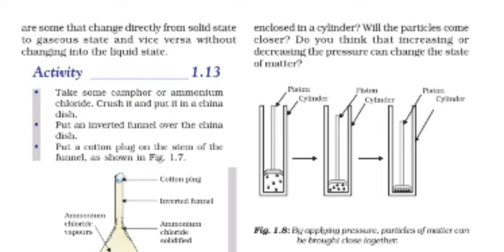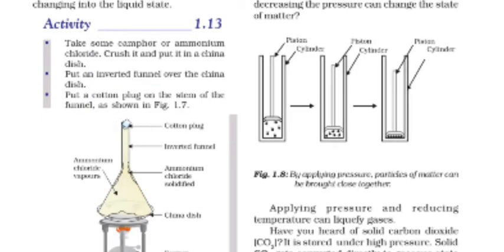In sublimation, the solid goes directly to vapor without becoming liquid. The activity uses ammonium chloride — you crush it and put it into a china dish.